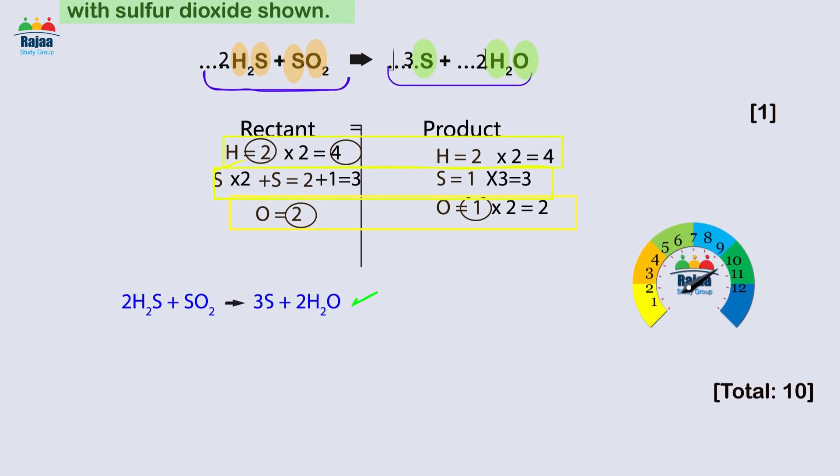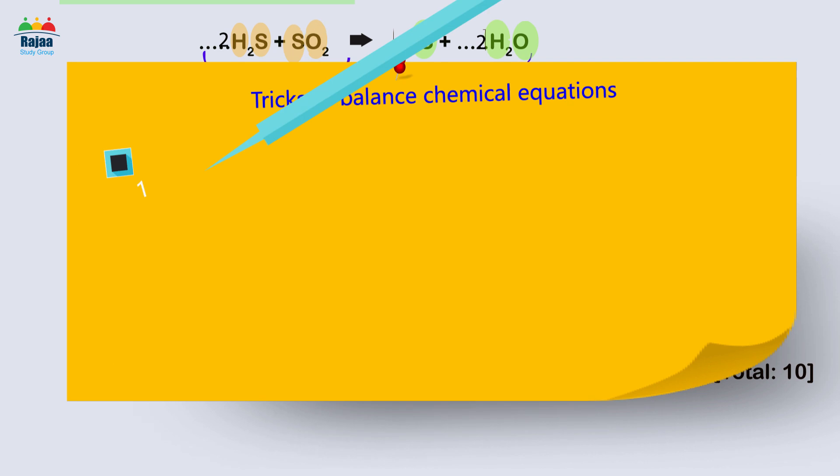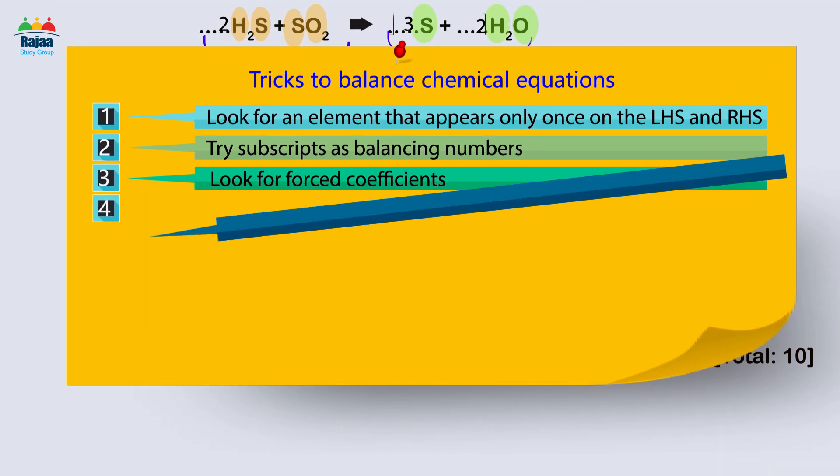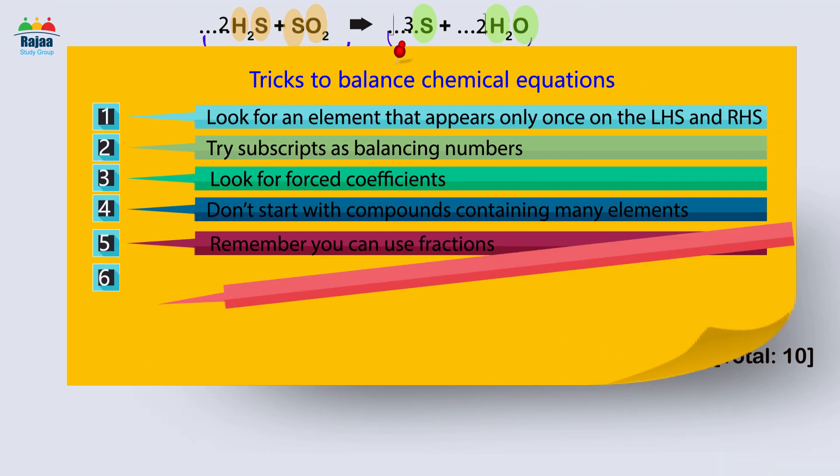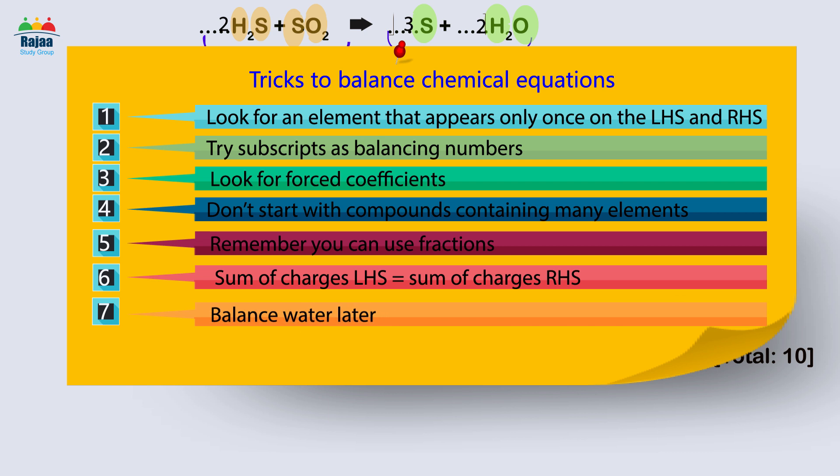The student is expected to have received the 10 marks for the question by the end of the fourth question. The sticky note describes seven tips that will assist the student in weighing chemical equations with practice.